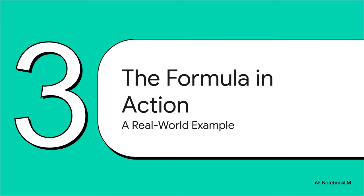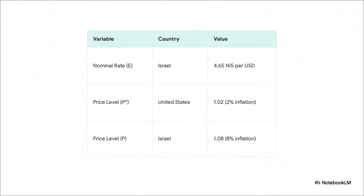Theory is one thing, but let's make this real. We're going to plug in some real numbers from a past scenario and see how this formula works in action. Let's rewind to 2010. Back then, the nominal exchange rate — that's our big E — was 4.65 Israeli shekels for every one US dollar. But here's where it gets interesting: the inflation was totally different in both places. In the US, there was about 2% inflation, so we'll call its price level 1.02. But in Israel, inflation was way higher at 8%, so its price level is 1.08. That difference is key.